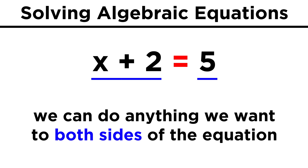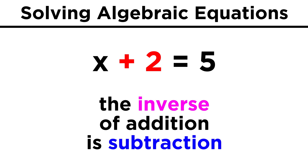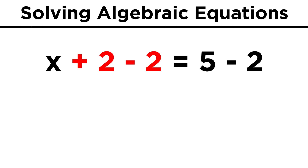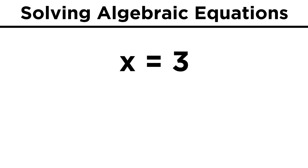We can do anything we want to this equation, as long as we do it to both sides, because if both sides are equal and we do the same thing to both sides, the sides will remain equal. So let's look at this equation. What is happening to x? Well, two is being added to it. How do we undo this? We simply perform the inverse operation, and the inverse of addition is subtraction. We have to subtract two from both sides. On the left, x plus two minus two leaves x all by itself. On the right, we get five minus two, which is three, and therefore x equals three, the answer we were expecting.